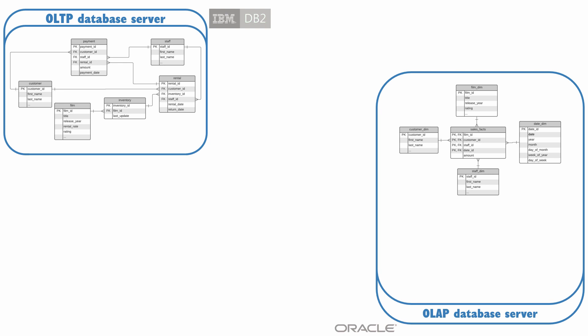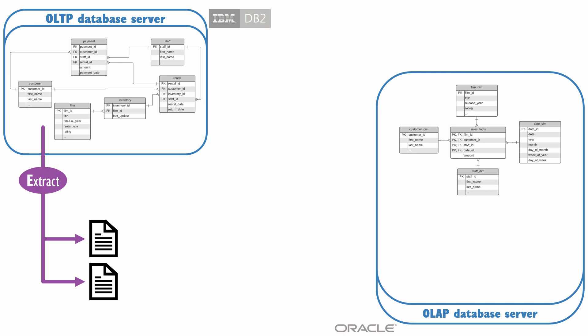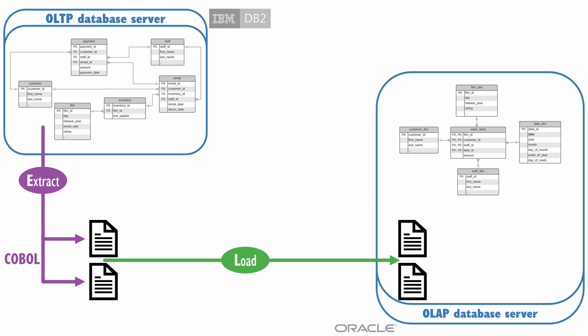Table data would often be dumped and denormalized into flat files, and the extraction was often performed via COBOL programs. The load process had two steps. First, the files were copied into the Oracle server, often via a utility that used the file transfer protocol. The flat files were then loaded into Oracle staging tables using a tool like Oracle SQL Loader, which would parse the delimited files and insert their data into relational tables.